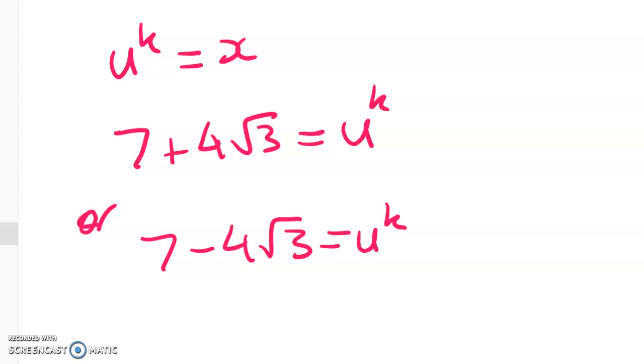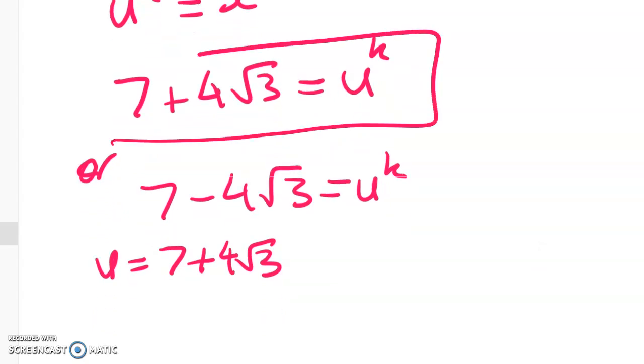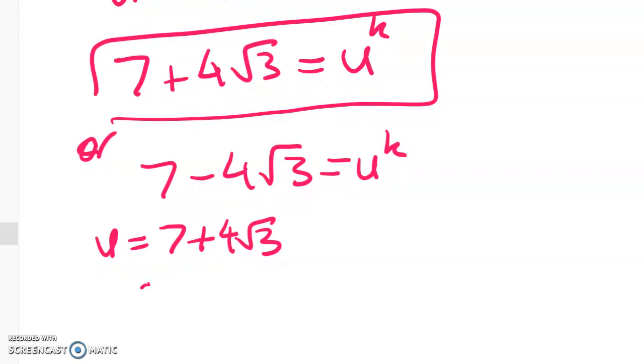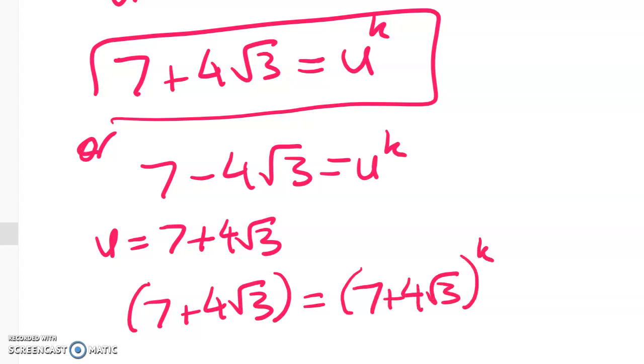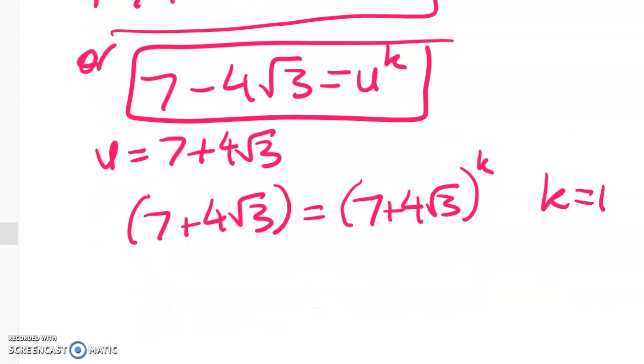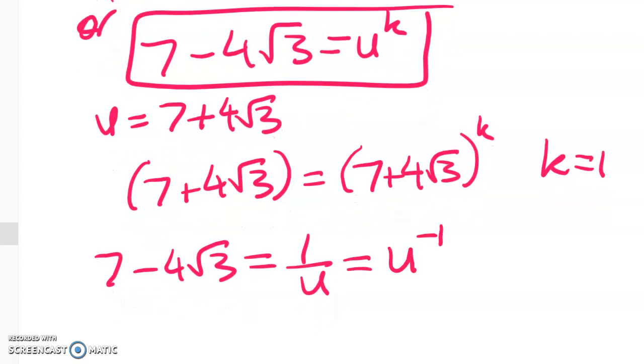But let's go right back to what u was. Well u was equal to 7 plus 4 root 3. So this one here we have 7 plus 4 root 3 is equal to 7 plus 4 root 3 to the power of k. So k equals 1. And for this one here, well we found out all the way back that 7 minus 4 root 3 was equal to 1 over u which is u to the power of negative 1. So that gives me k is equal to negative 1.